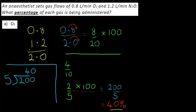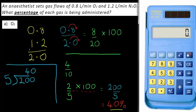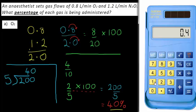Now to check this with a calculator, we don't need to carry out all these steps. Let's just check that 0.8 plus 1.2 correctly adds to 2.0 — yes it does. Then for the proportion of oxygen: 0.8 divided by 2.0, multiplied by 100, gives us 40 percent directly.